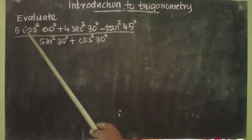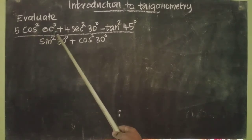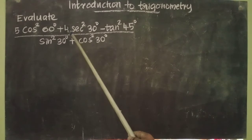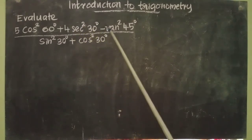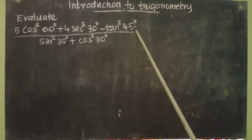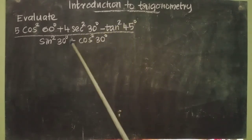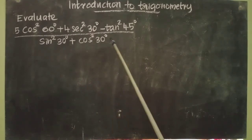Evaluate 5 cos² 60° + 4 sec² 30° - tan² 45° divided by sin² 30° + cos² 30°.